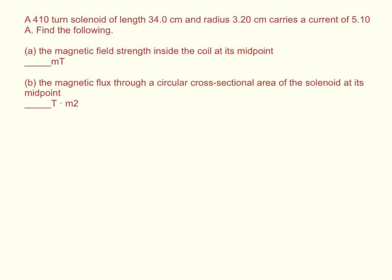A 410-turn solenoid of length 34 centimeters and radius 3.2 centimeters carries a current of 5.1 amps. Find the following: A, the magnetic field strength inside the coil at its midpoint, and B, the magnetic flux through a circular cross-sectional area of the solenoid at its midpoint.